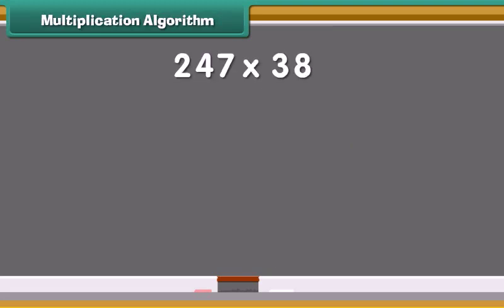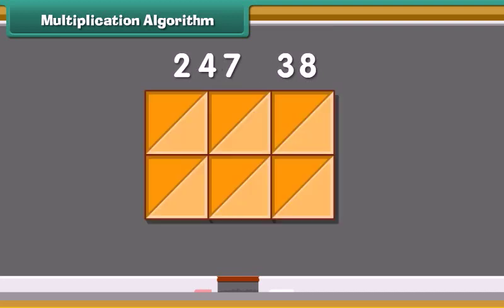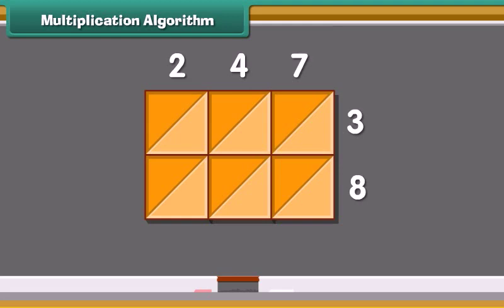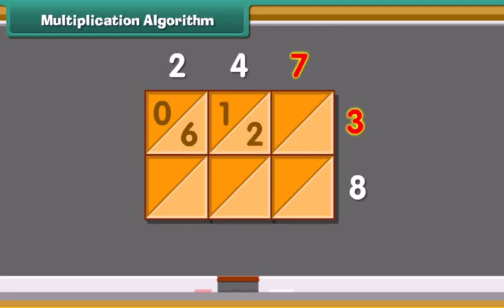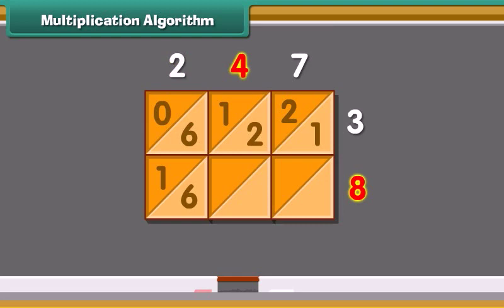Now we will multiply 247 and 38 by the lattice algorithm. We will multiply the numbers one by one and write the answers in the boxes, with tens in the tens box and ones in the ones box. Firstly, multiply 2 and 3 — the answer is 6. Then multiply 4 by 3 — 4 times 3 is 12. Write the answer in the box. Now 7 times 3 is 21. Similarly, 8 times 2 is 16, 8 times 4 is 32, and 8 times 7 is 56.